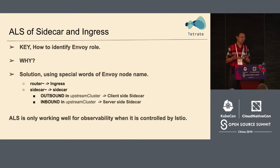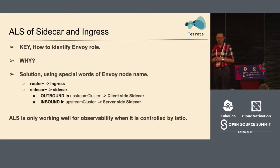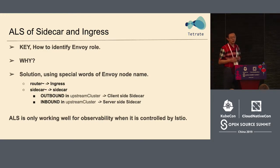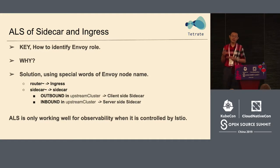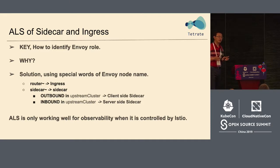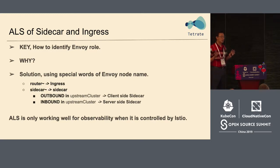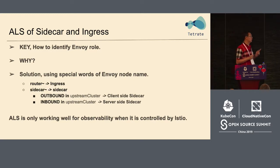ALS can be activated in two different modes: sidecar or ingress. If you look at the mesh topology, the sidecar is behind the application and acts like an agent. If it's a gateway, Envoy itself is the service. The topology you want to show is totally different depending on the mode.